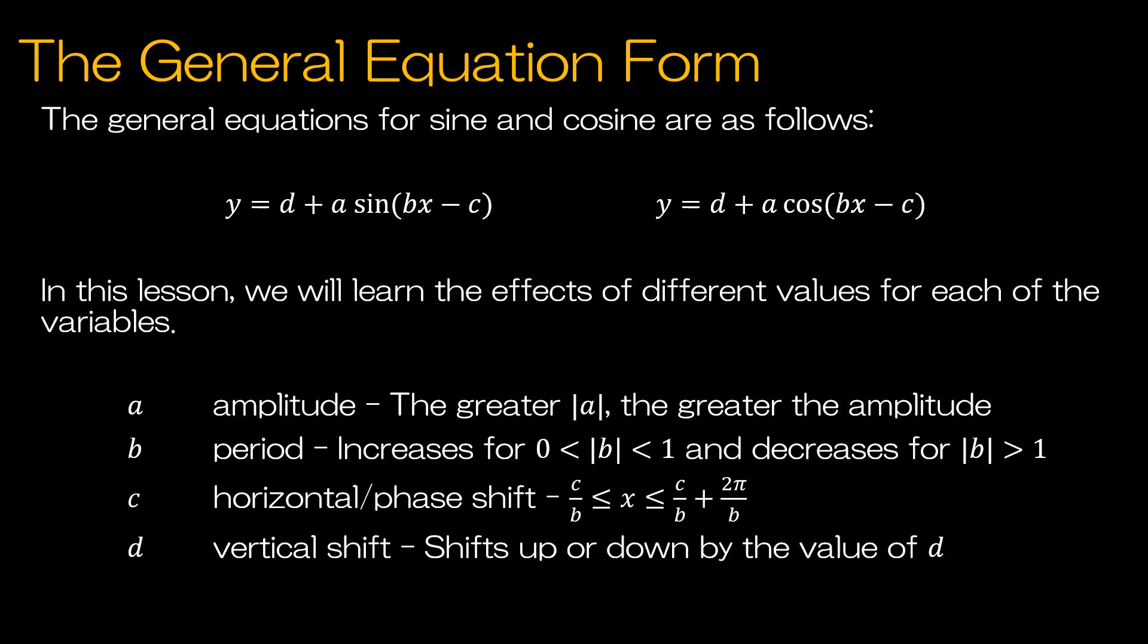So the general equation form for either sine or cosine functions is y equals d plus a, and then the function sine or cosine of b times x minus c. And we're going to learn about the effects of all of the different variables in this lesson. So we'll begin with a. a is the amplitude. a is going to make our graph, which originally looks like this, look like this, or perhaps with a smaller amplitude. The period is not going to change, just the amplitude, so just the height of each curve.